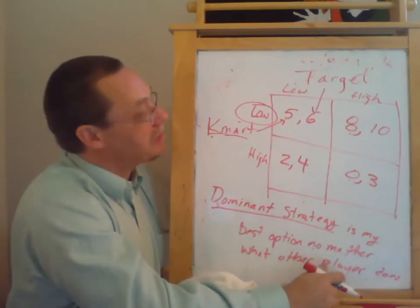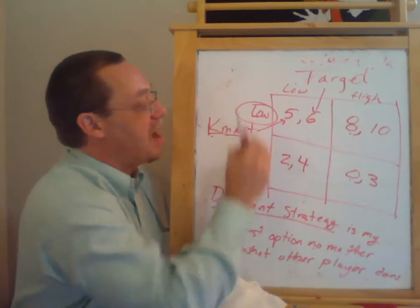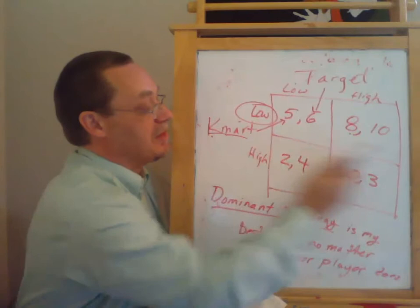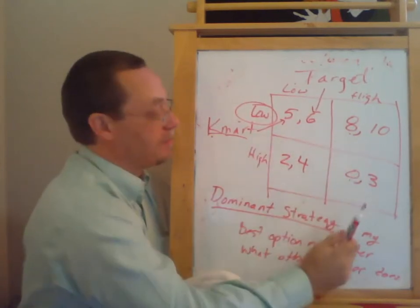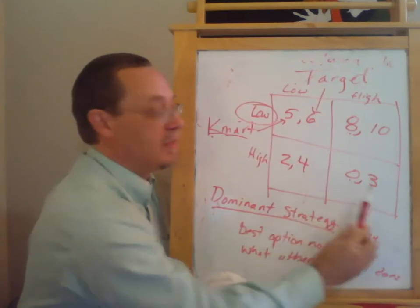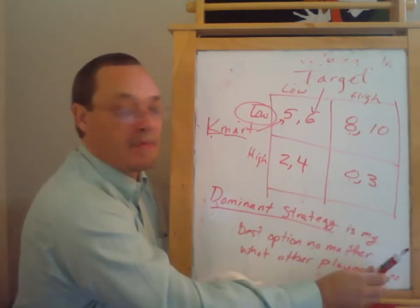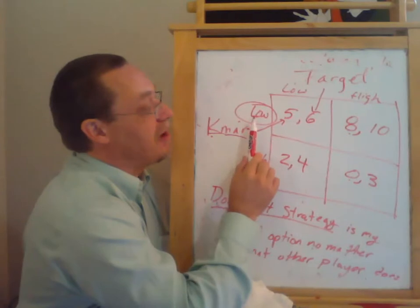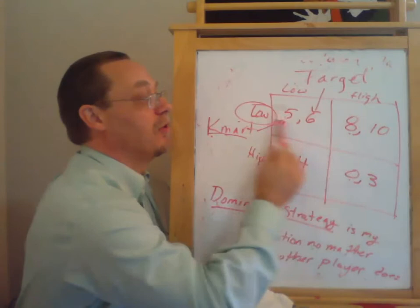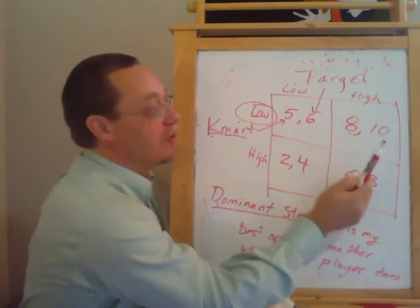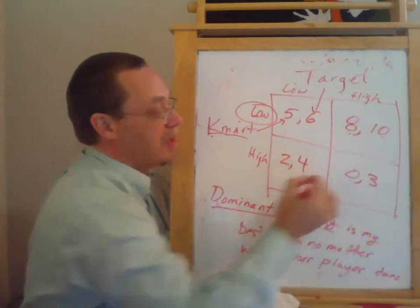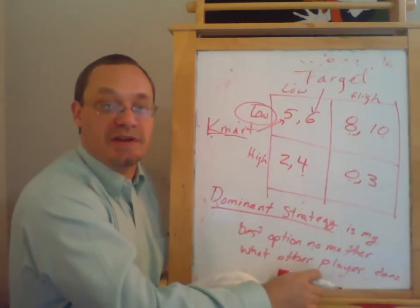What about Target? Well, if Kmart plays high, what will Target want to do? If Kmart plays high, then we're in this row down here. And Target will want to play high so that they can get four instead of three. What if Kmart plays low? If Kmart plays low, then when Target gets to choose which column we're in, in this top row, and they would want to choose high. So in fact, in this game, Target does not have a dominant strategy.